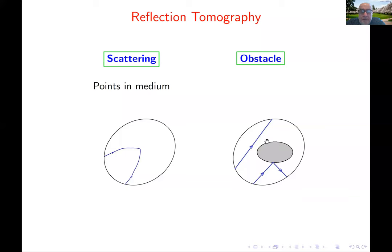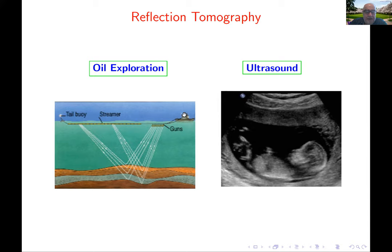The obstacle problem includes both transmission of waves and reflection of waves. Reflection arises in both geophysics and medical imaging. In geophysics, it's used for finding oil — you have a ship with a long tail with sound guns, and the travel time is recorded in hydrophones on the same tail. You want to recover the substructure under the sea; most oil exploration is done in the sea.